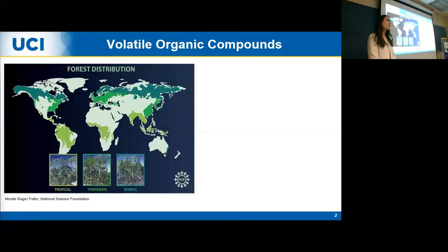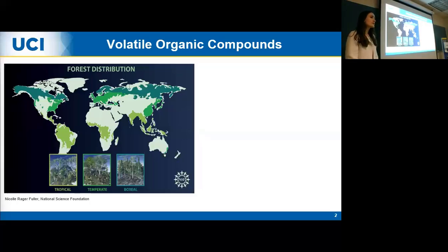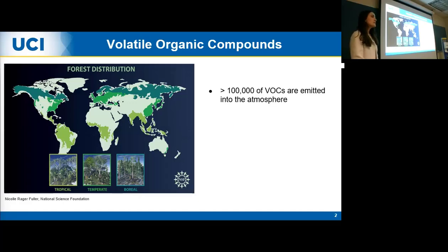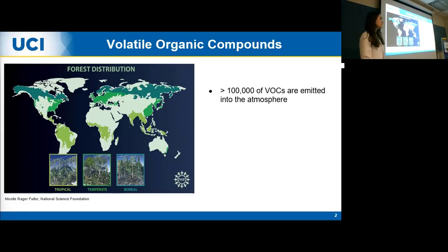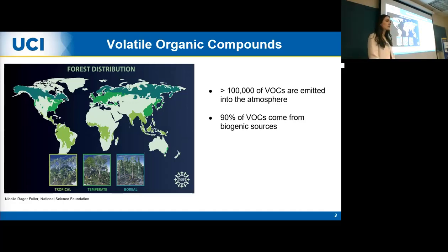Volatile organic compounds are organic gases released into the atmosphere, and they can come from various sources such as industry as well as biogenic sources such as plants and vegetation. It's been estimated that upwards of 100,000 different VOCs have been emitted into the atmosphere, and 90% of them come from biogenic sources such as plants and vegetation.